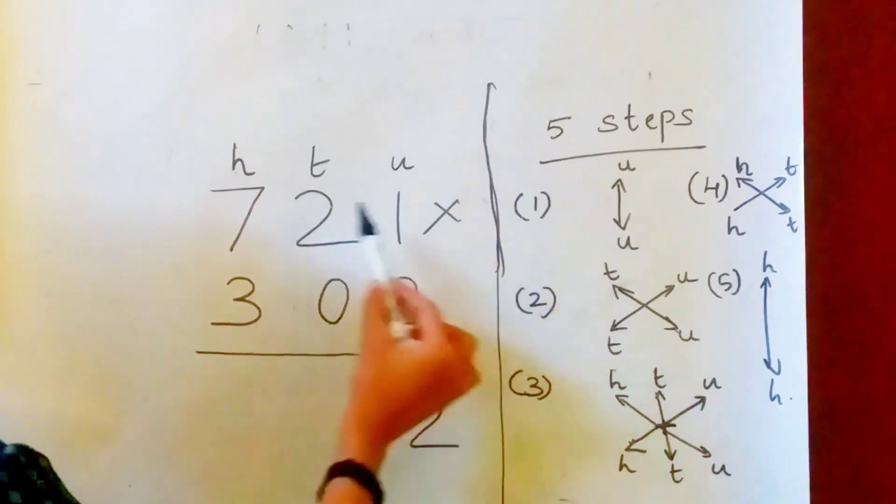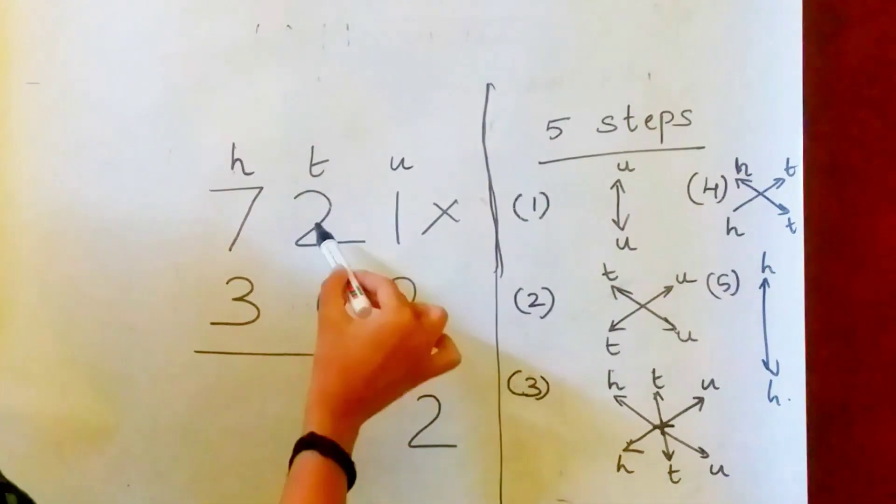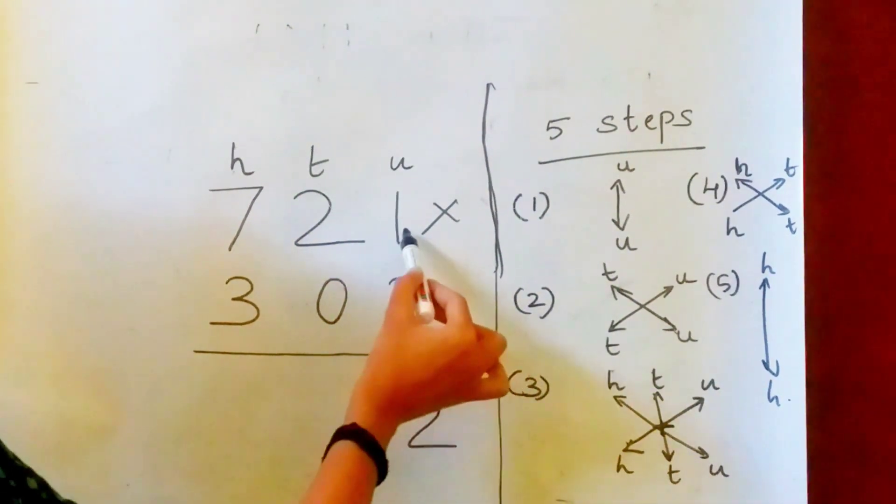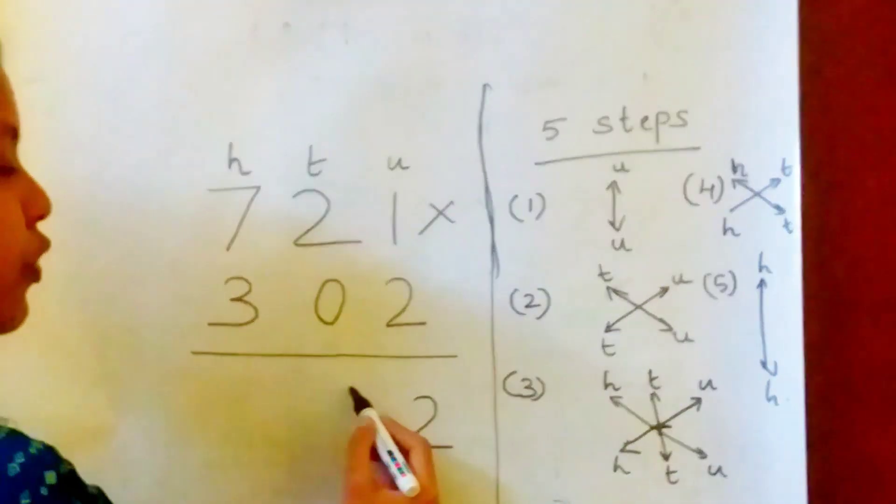Second step. This with this plus this with this. So 2 into 2, 4 plus 1 into 0, 0, which is 4.